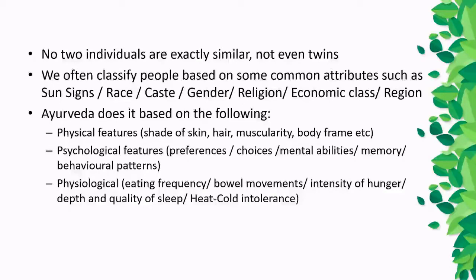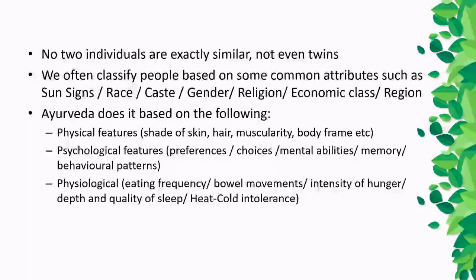So many types of classifications of human beings already exist. But how does Ayurveda do this classification? Ayurveda classifies individuals based on physical features, behavioral patterns, psychological features, and physiological features. These are the domains Ayurveda uses. Physical features might include shade of skin, hair, muscularity, and body frame.